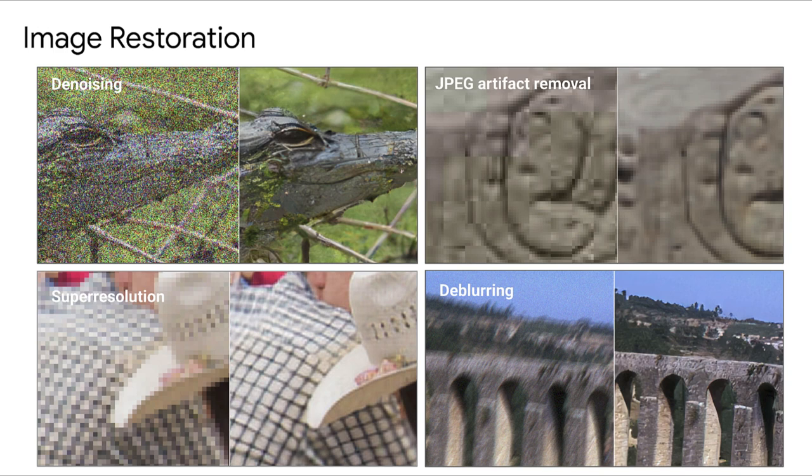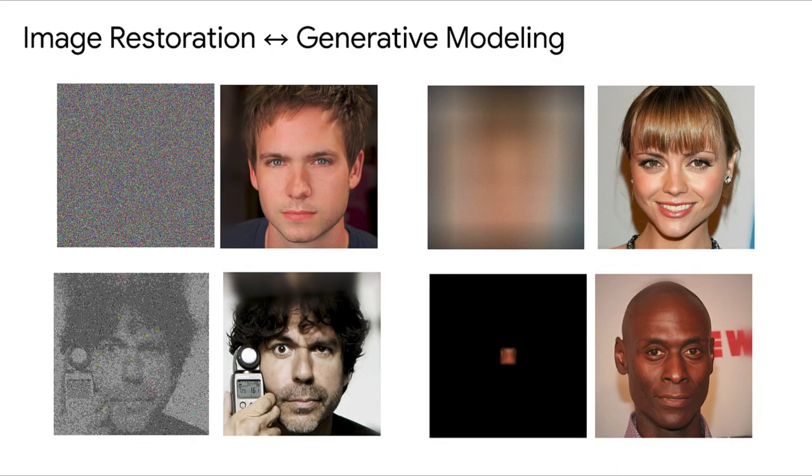Examples of image restoration include image denoising, compression artifact removal, super-resolution, and motion deblurring. Image restoration is also closely related to image generation. For example, we can imagine being given an extremely degraded image such as one that is heavily noisy, blurred, or compressed and asked to generate a new image starting from this low quality observation.